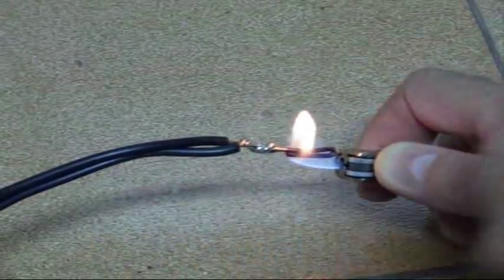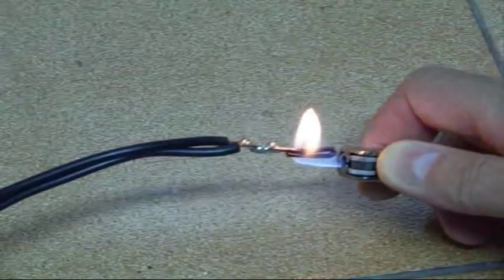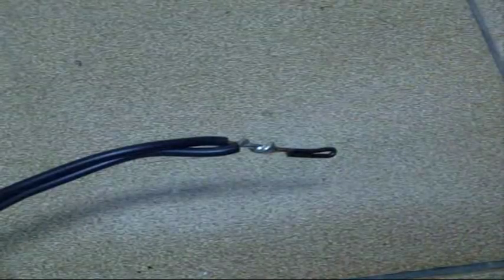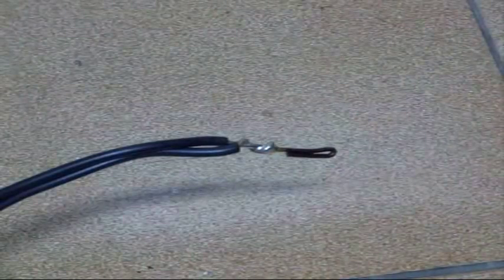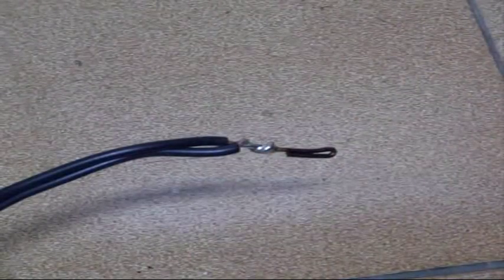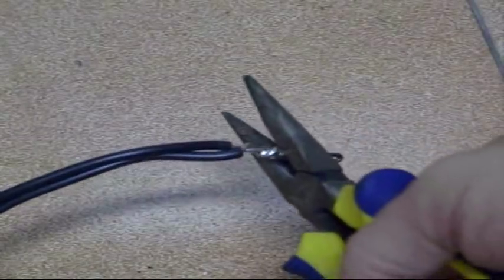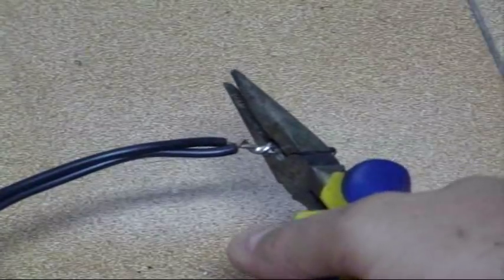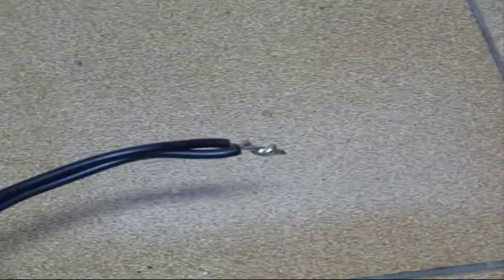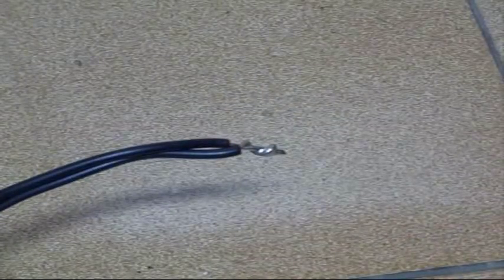And there you have it. There's the completed solder joint. When you're done you snip off this portion of it and there you have it. There's your solder joint.